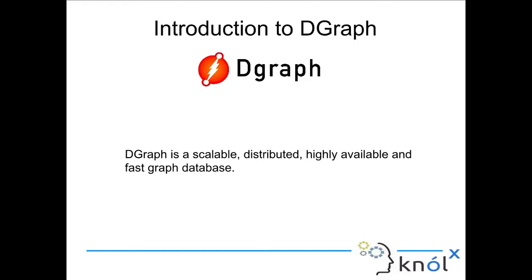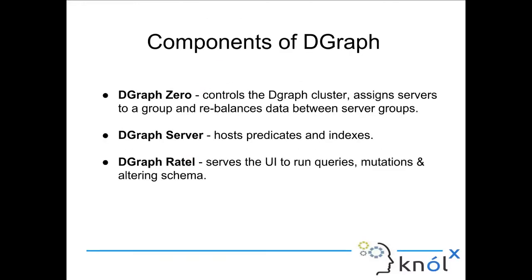First is DGraph Zero. DGraph Zero is basically a server or cluster manager. There is a cluster in DGraph that is maintained by it. DGraph Zero is a cluster manager that manages the different DGraph servers — multiple DGraph servers that can exist on different machines. There can be more than one DGraph Zero managing the cluster. It controls the DGraph cluster, assigns servers to a group, and rebalances data between server groups.